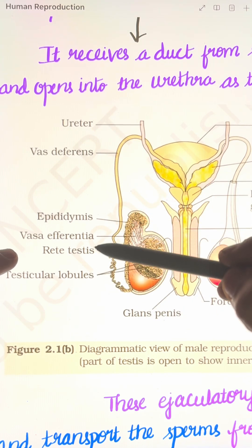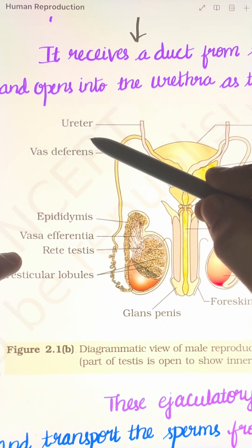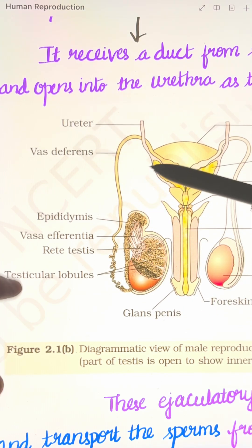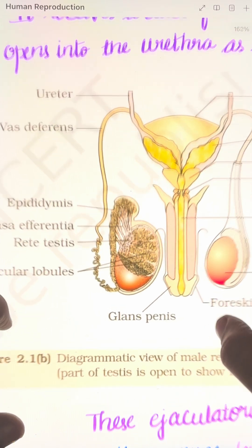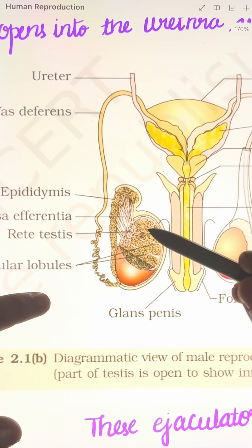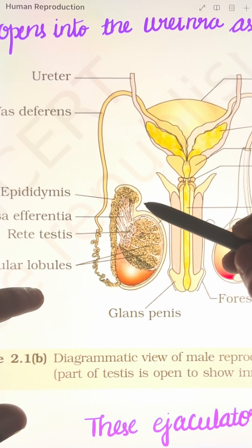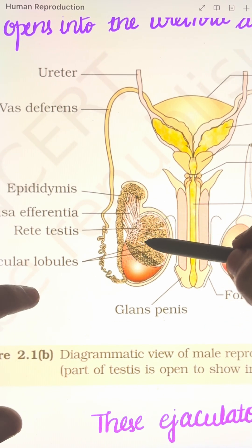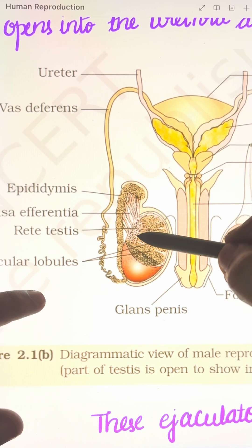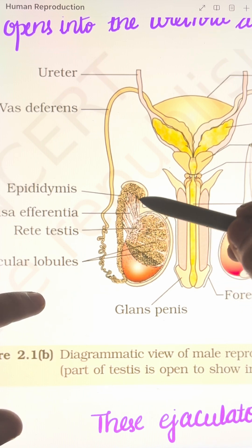We need to remember them in the correct order, because transport happens in this order. First, the seminiferous tubules produce sperm. The sperm will then open into the vasa efferentia through the rete testis.